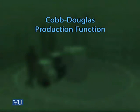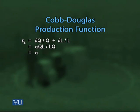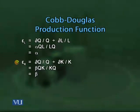On the next slide, we calculate output elasticity with respect to labor and capital. Using the formula (∂q/q)÷(∂L/L) = (∂q/∂L)·(L/q), the result gives output elasticity with respect to labor equal to α — the exponent of L. Similarly, output elasticity with respect to capital equals β — the exponent of K.